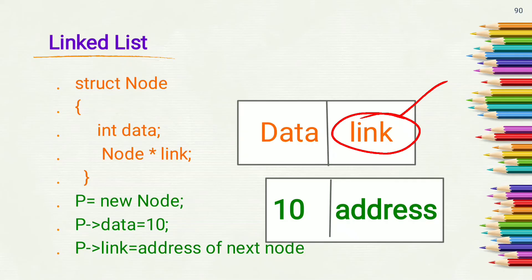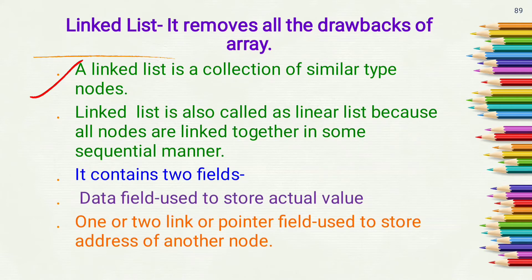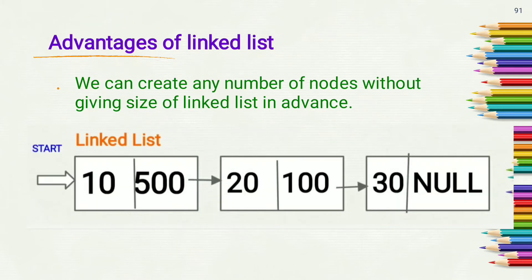If the node contains two pointers, one stores the address of the previous node and the other stores the address of the next node. Linked list is also called a linear list because all nodes are linked together in some sequential manner. We call it linear because nodes are connected in a sequential order.